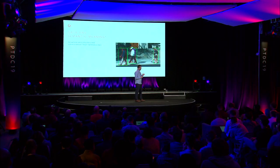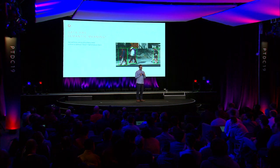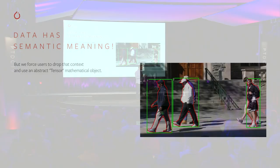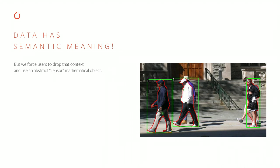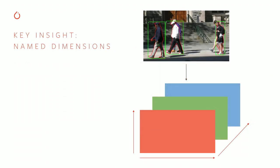One area is around retaining semantic information. Today, users start with images, with text, with video. But as soon as you start doing PyTorch operations, we kind of force you to throw away that information and use an abstract mathematical object called a tensor. So the idea behind named tensors is super simple — it's to name dimensions. If we take our image and turn it into the typical 3D tensor format, instead of erasing what the dimensions mean, we name them explicitly: height, width, channel — HWC in this example.